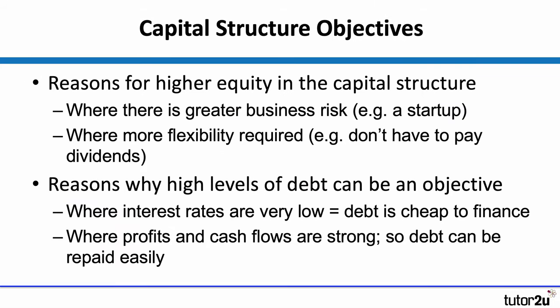Finally, particularly for larger businesses, there are capital structure objectives — relevant when you consider the gearing ratio. The question here is: what is the optimal balance in terms of how the business is financed? This means deciding how much debt — loans — versus how much equity the business should carry. If there is greater business risk, a capital structure leaning more toward equity finance is preferable. However, businesses with high profits and strong cash flows can set an objective to carry a higher level of gearing — a higher level of debt. This will be explored further when looking at gearing.